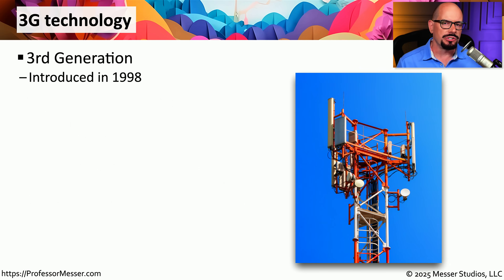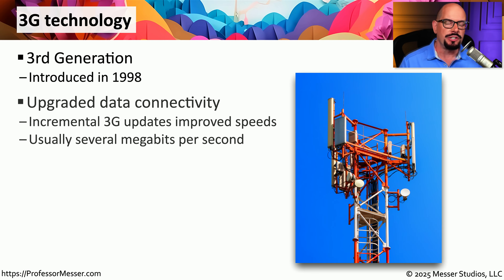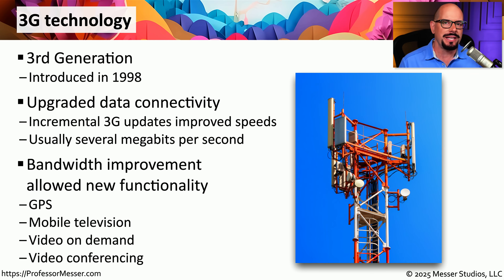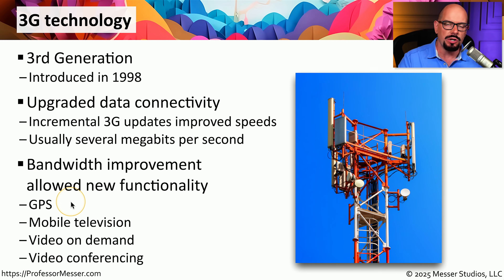Cellular technology really started taking off with 3G technology in 1998. 3G allowed us to send and receive larger amounts of data over these networks, which means we were able to increase the capabilities of our mobile devices. This allowed us to have GPS functionality, which we'll talk more about in a moment.